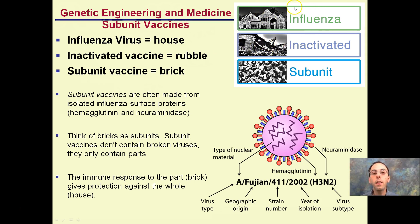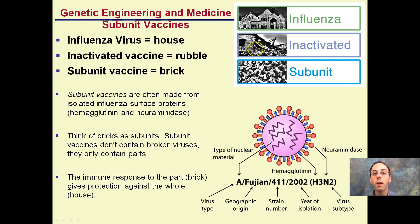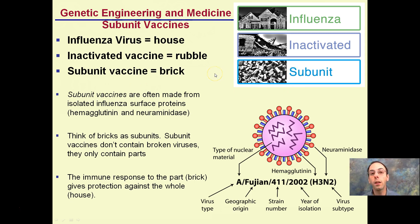They take the flu virus and denature it in some way — heat shock it, or add certain enzymes — basically inactivating it. However, because it's rubble of the house, it's the entire flu virus just inactivated. Genetic engineering goes one step further with what's called a subunit vaccine, where they're just using bricks, because we want the body to recognize the virus but not be at risk of getting it — which is one problem with inactivated vaccines.